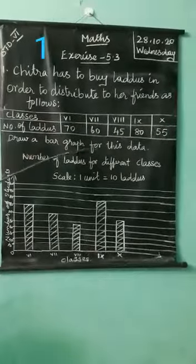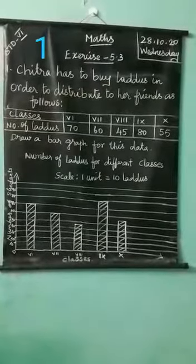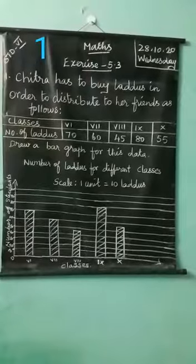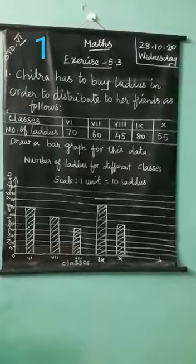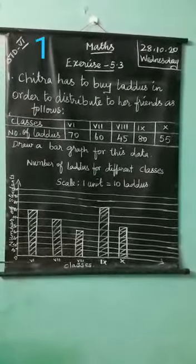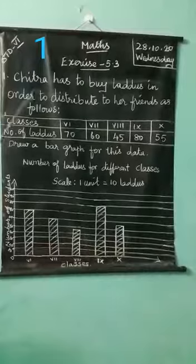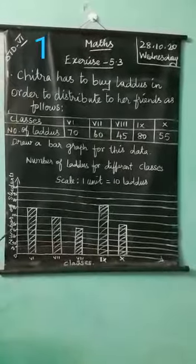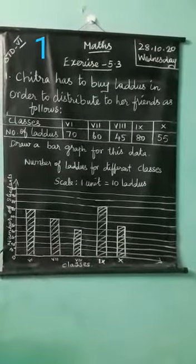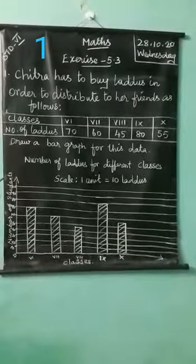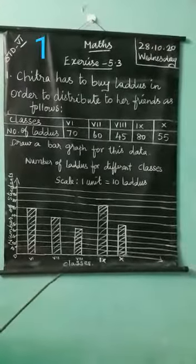So draw a bar graph for this data. First we draw a vertical line and a horizontal line. This is the vertical line, this is the horizontal line — this one is the x-axis, this one is the y-axis. Next we give a title to both lines. In the y-axis the title is 'number of students', and in the x-axis the title is 'classes'.